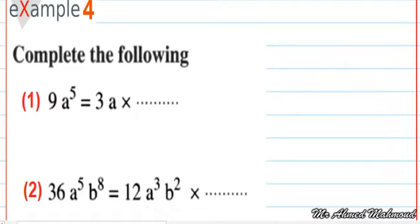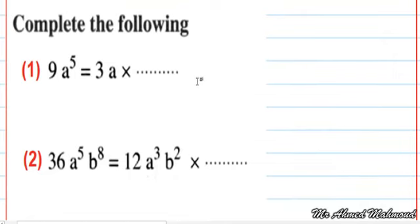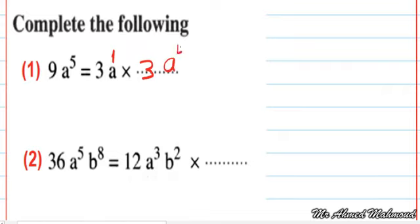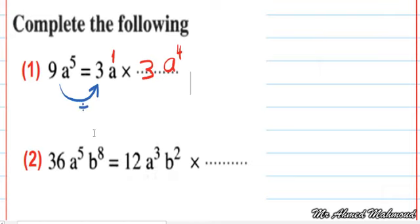Complete the missing term. We have two ways to solve. First, the mental way: 3a times the missing term equals 9a to the power of 5. Here a is to the power of 1. We ask: 3 times what equals 9? Answer: 3. Then a power 1 times a power what equals a power 5? Answer: a power 4. Alternatively, you can divide 9a power 5 by 3a to get the missing term.